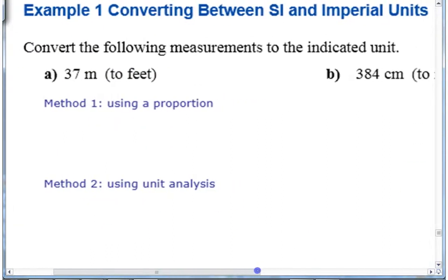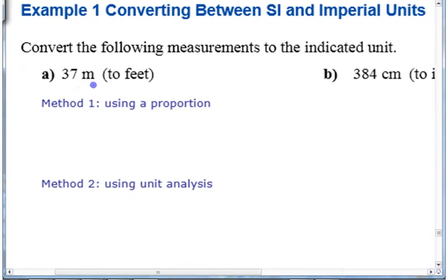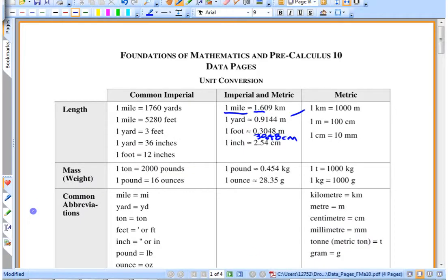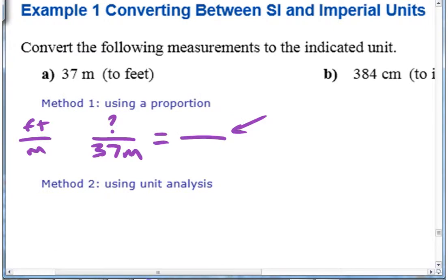If you are trying to do some conversions — 37 meters to feet — and you're using a proportion, what that involves is writing feet and meters like this. You have 37 meters and you want to find how many feet, so you write a proportion by comparing it to a ratio you know. You look up on your sheet something that compares feet and meters: one foot is 0.3048 meters. So you can write one foot over 0.3048 meters.